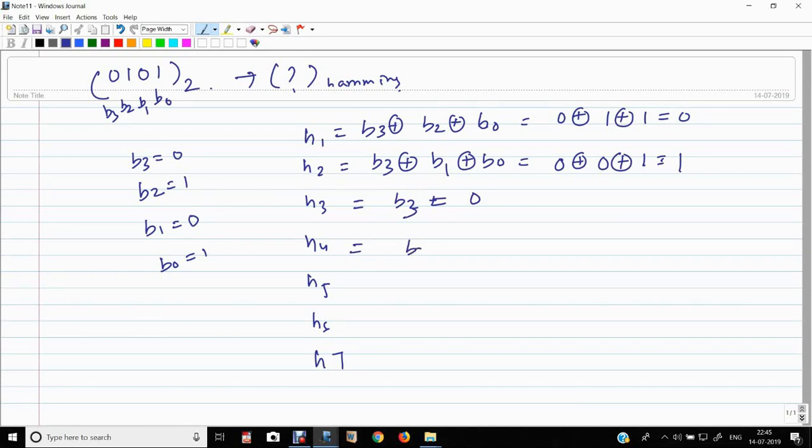H4, B2 plus B1 plus B0. This will be 1 plus 0 plus 1. This will be 0. H5 equals to B2 equals to 1. H6, B1 equals to 0. H7, B0 equals to 1.